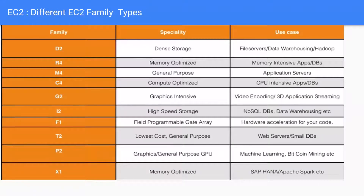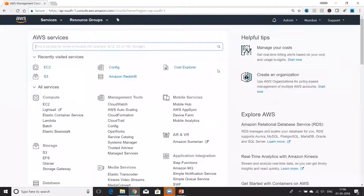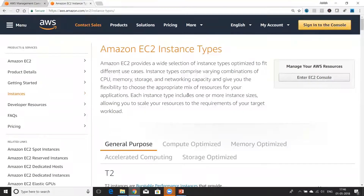From time to time, AWS keeps launching new instances for new use cases. You can go to their documentation page, which is the best source of information about existing families and instances along with their best use cases. To find that out is very easy — you can just Google for AWS instance types. Normally the first link you'll get is the AWS documentation about these instance types.